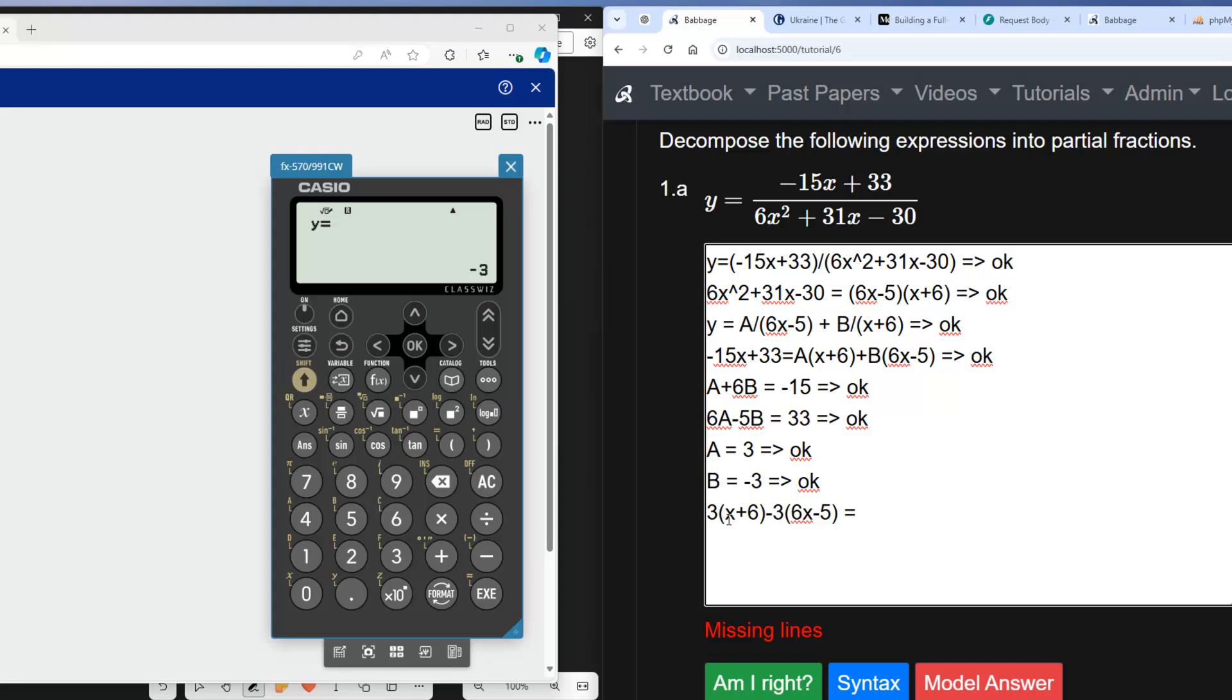-18 plus 3 is going to give us -15x. And then we've got 3 times 6, which is 18. We've got -3 times -5, which is plus 15. 18 plus 15 is 33, so that's going to be 33, so plus 33.